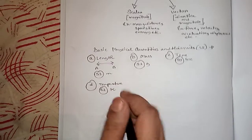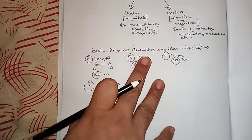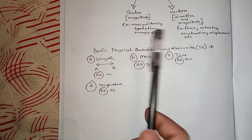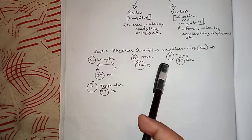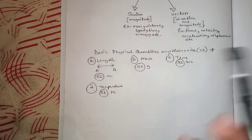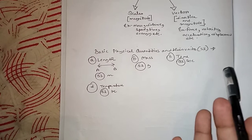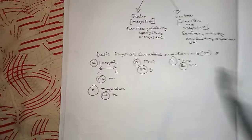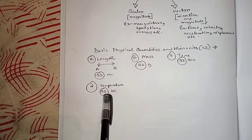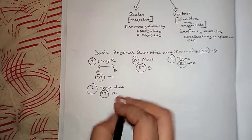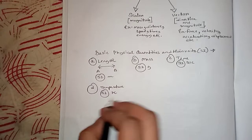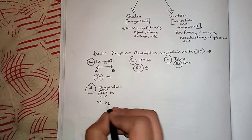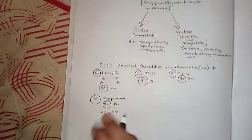The SI unit of temperature is kelvin (K). All these basic physical quantities have other units as well — for example, length has meter and centimeter; mass has gram and kilogram; time has second, minute, hour, day, month, and year. For temperature, kelvin is the SI unit, but in daily life we use degrees Celsius or degrees Fahrenheit.